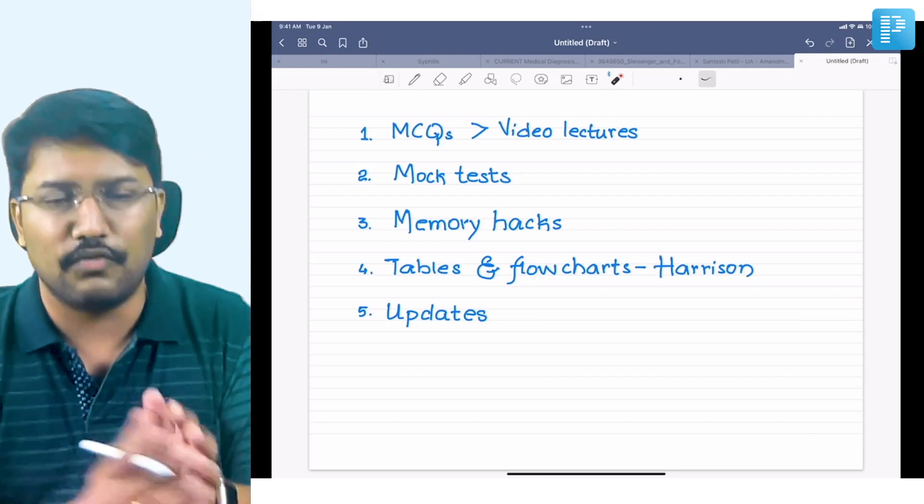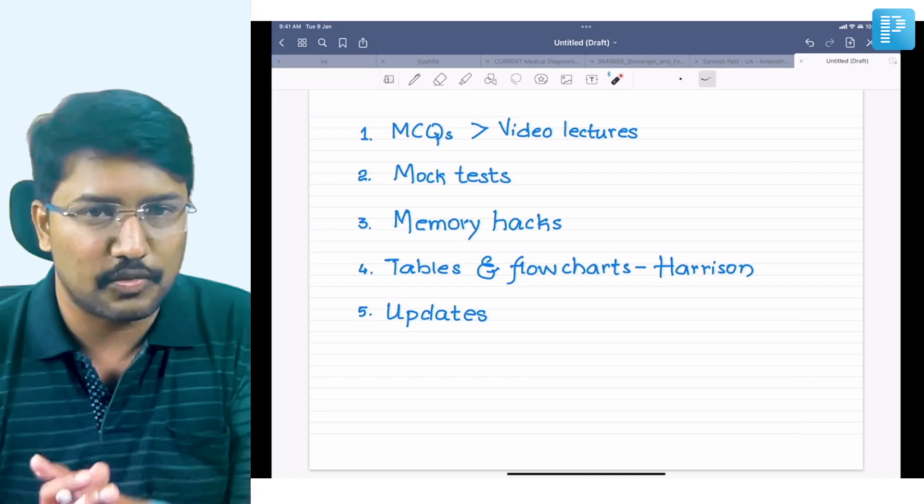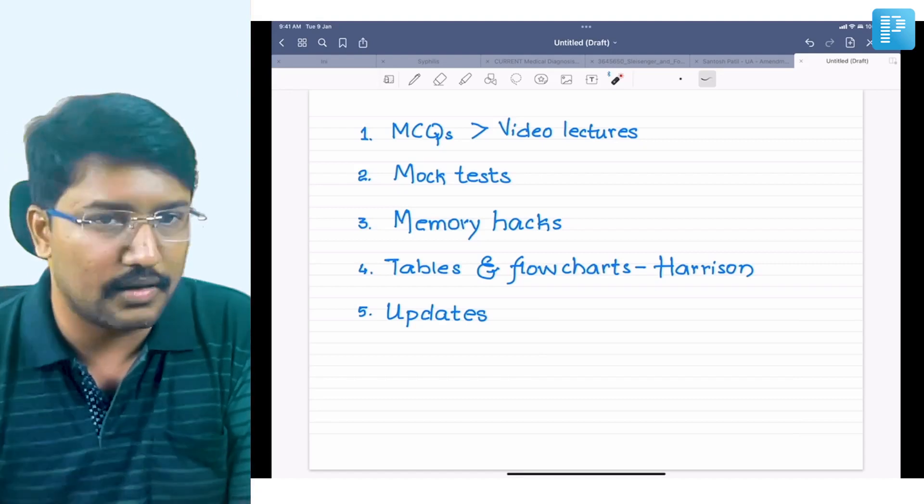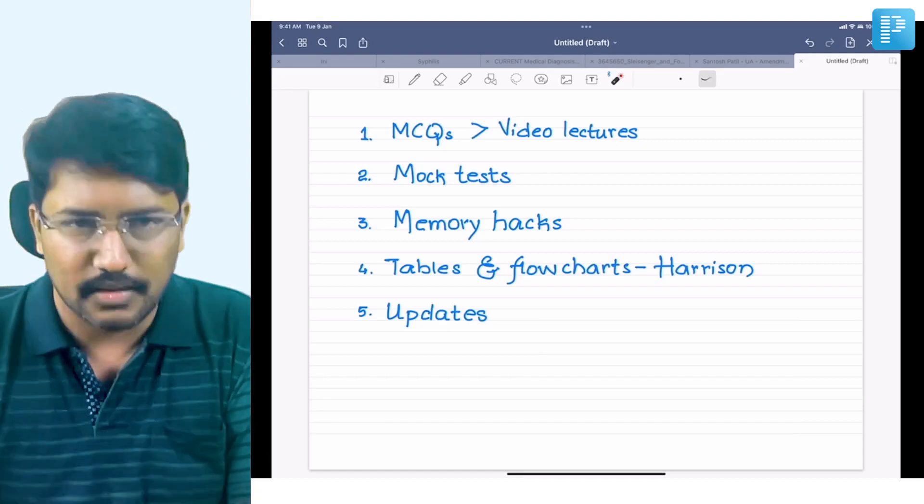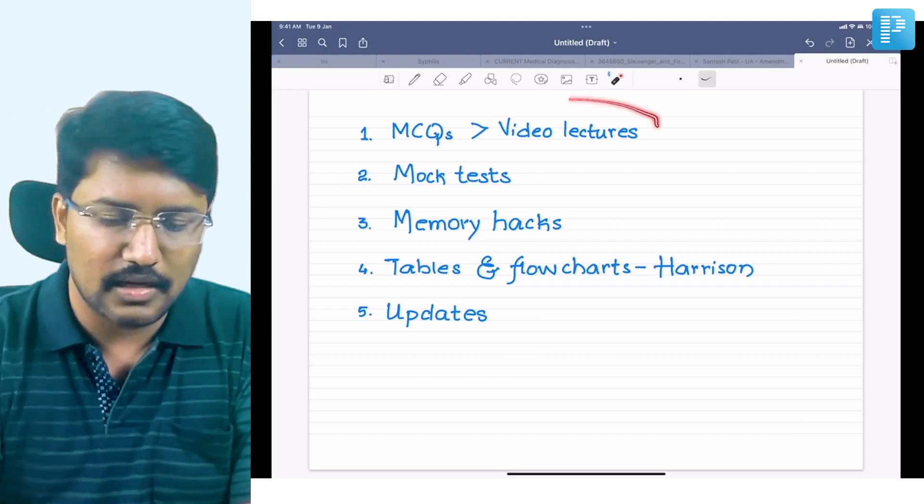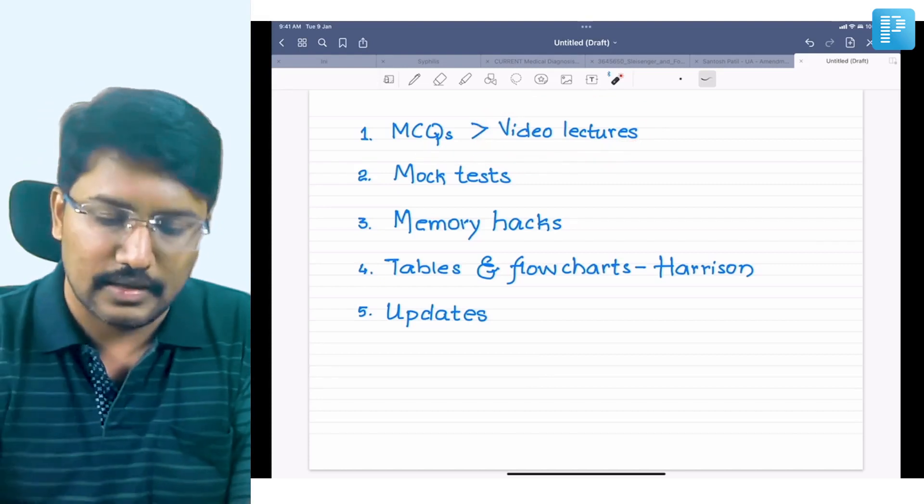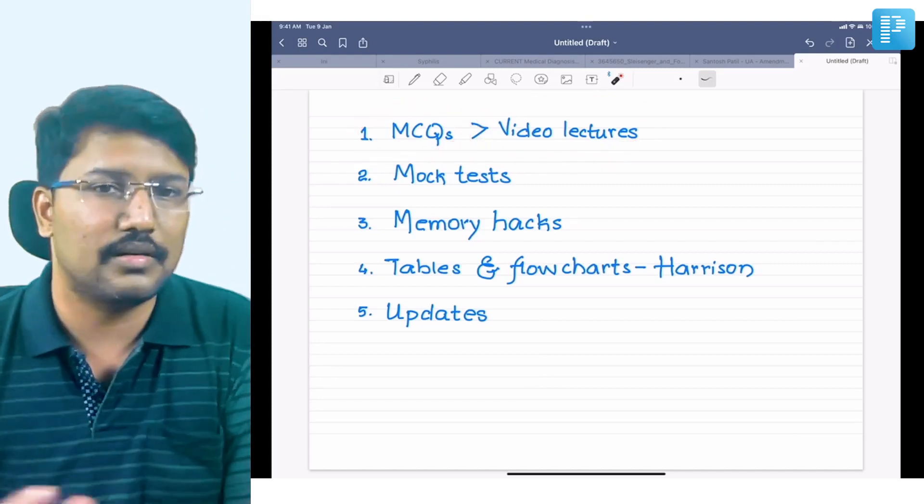If you still feel you need conceptual understanding—it's a very conceptual topic and you're finding it difficult to answer—for example, questions related to diabetes insipidus require a lot of conceptual understanding. They're mentioning urine volume, urine osmolality, other findings, vasopressin test results, water deprivation test results. If you feel you're unable to grasp that, then start with video lectures and then go to MCQs. Otherwise, solve more MCQs. Trust me, this is going to be an important game changer.